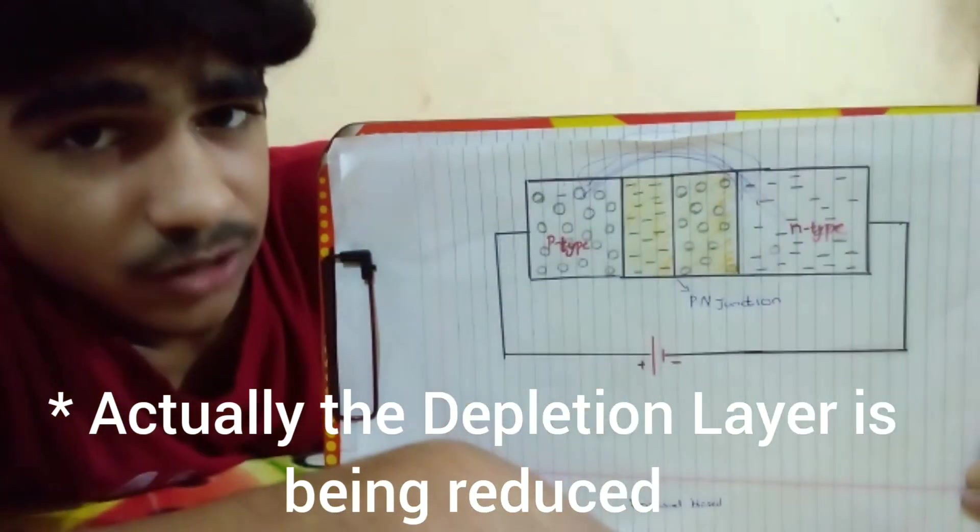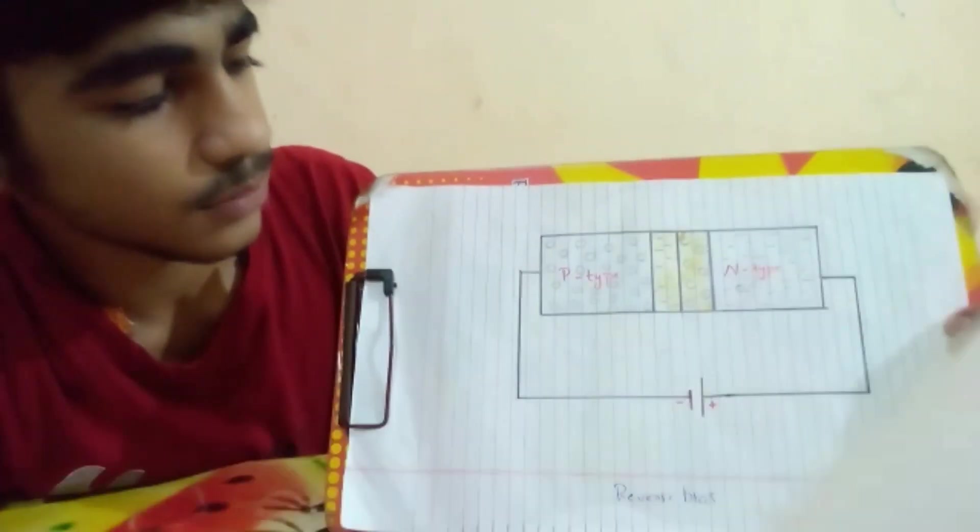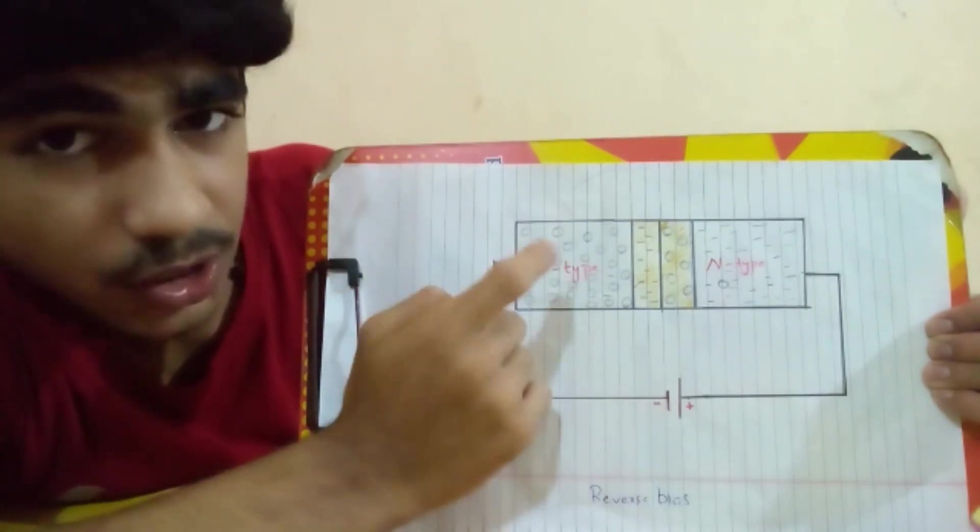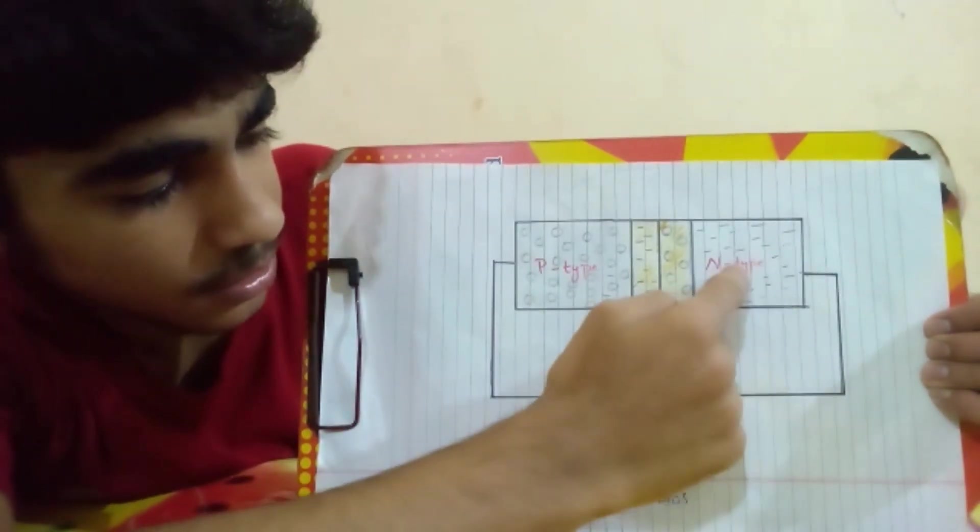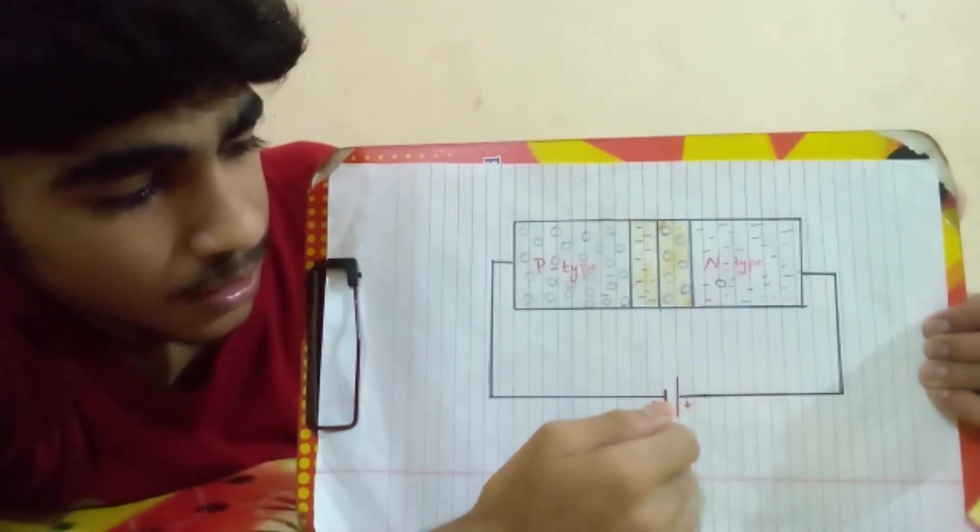Next we have the reverse bias condition. In this circuit we can see the negative terminal of the cell is connected to the P type, whereas the positive terminal of the cell is connected to the N type. And in this circumstance the diode just acts like an insulator.